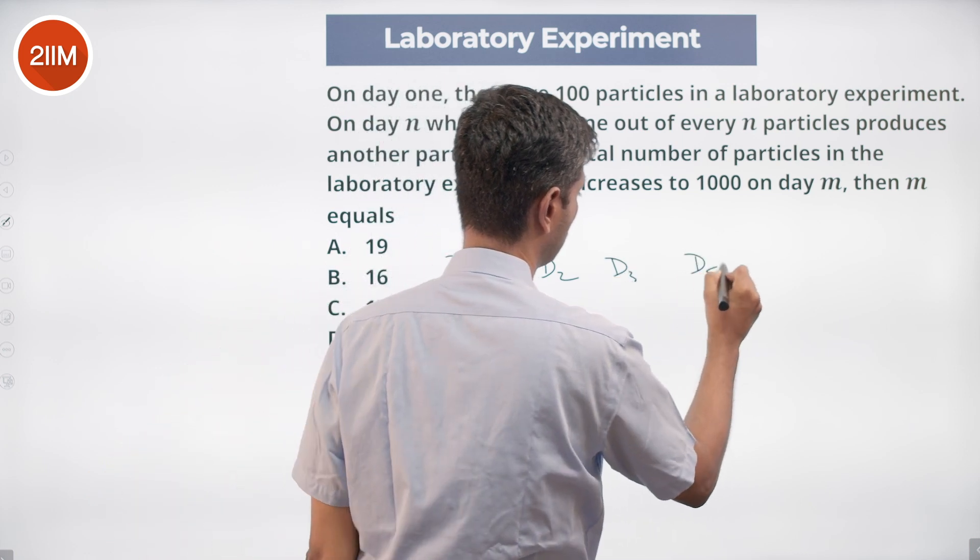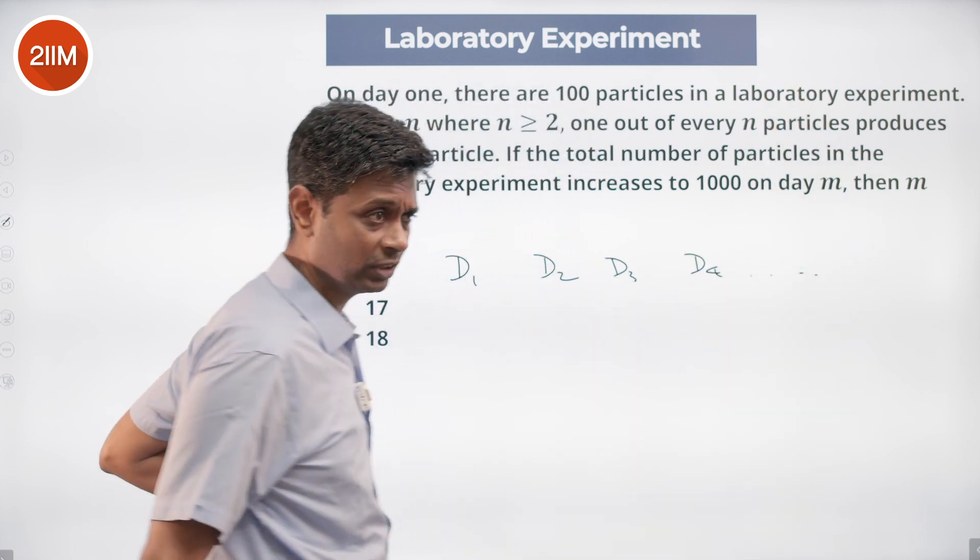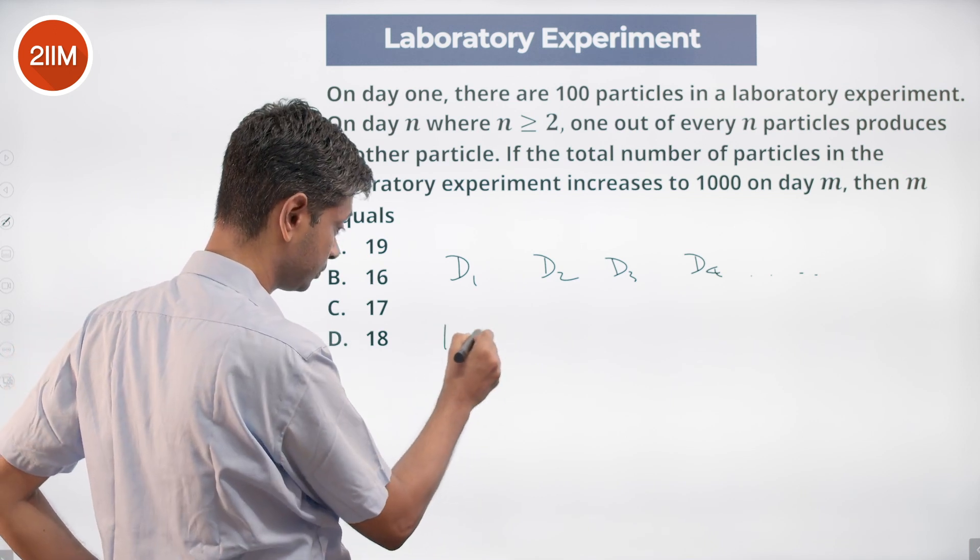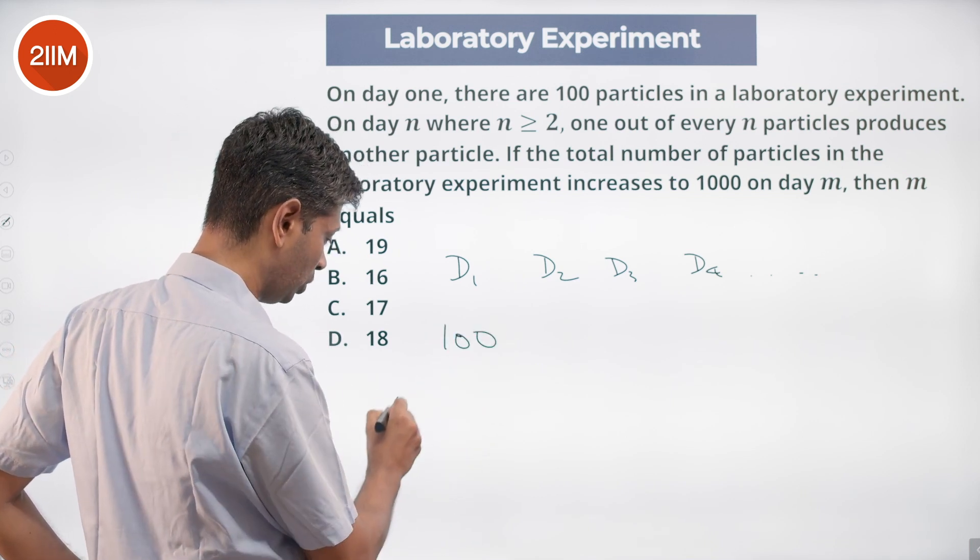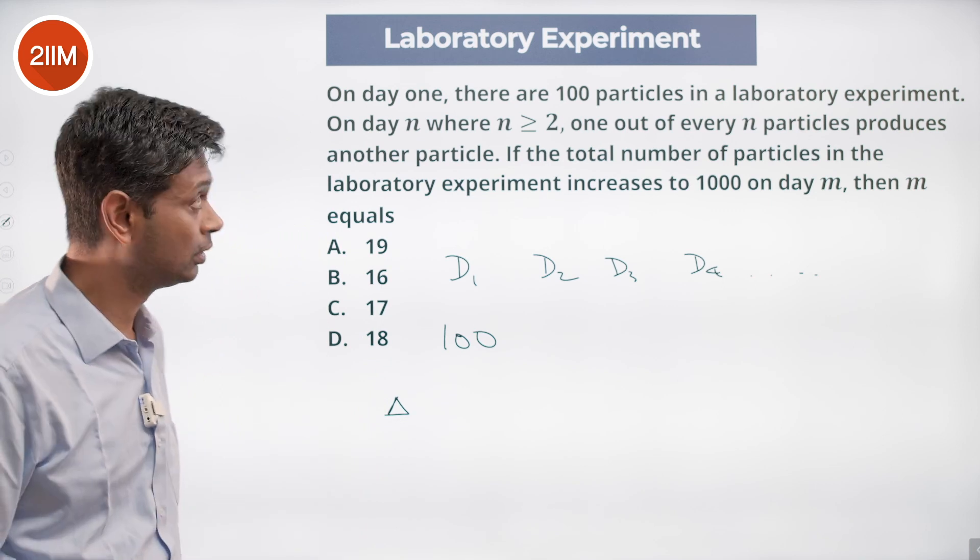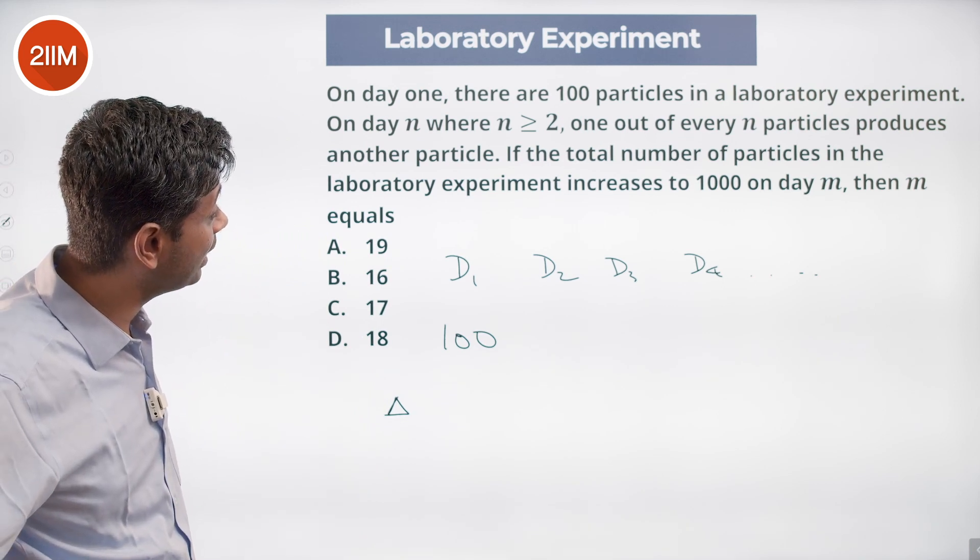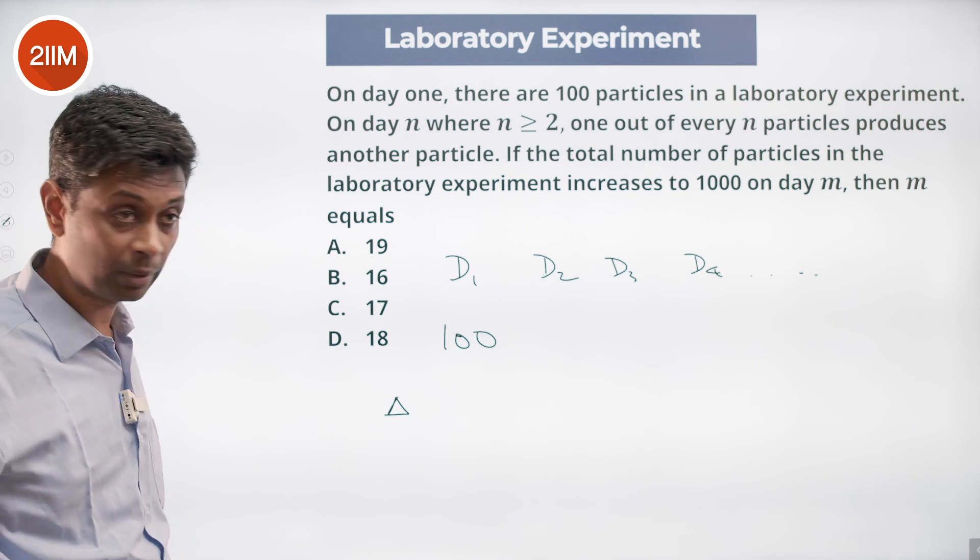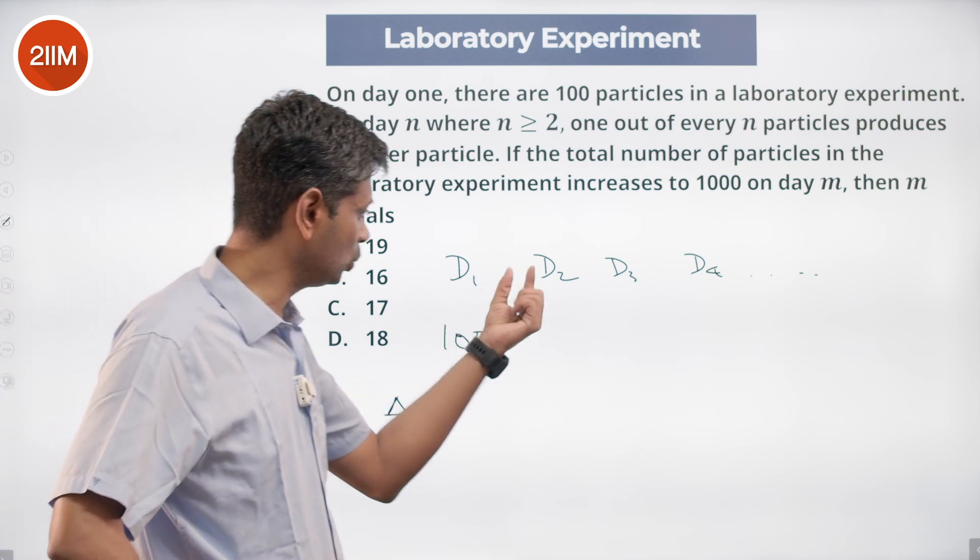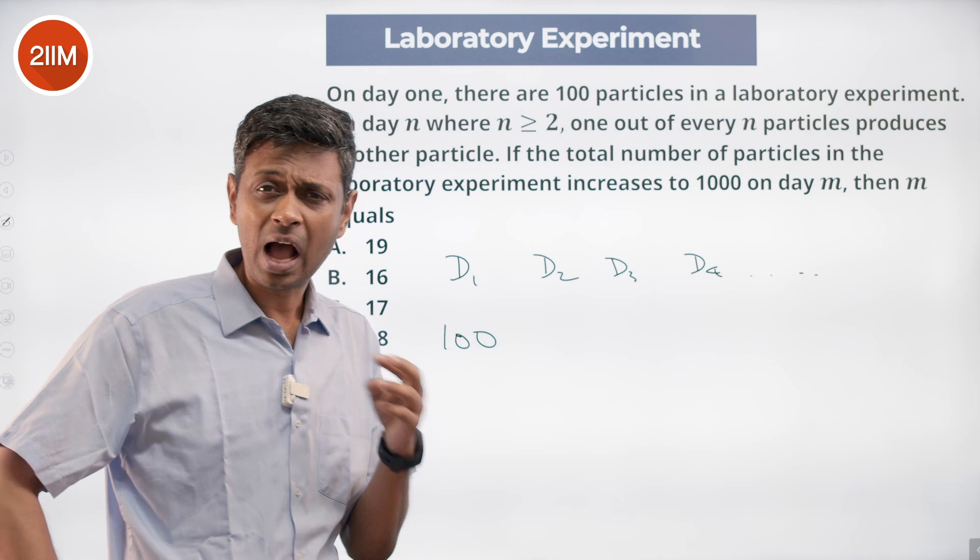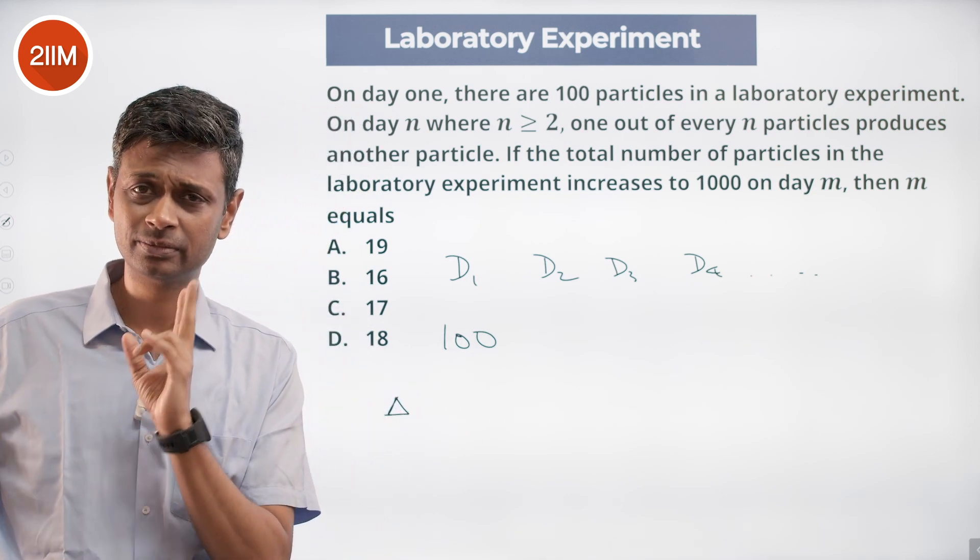Day one, there are 100. What are the additions that happen on day two? One out of every two particles produces another particle. So on day two, we start with 100, and half of 100 is added. Half of 100 is 50, so we'll have 150.